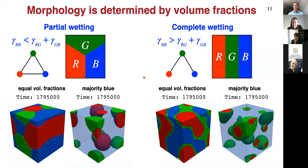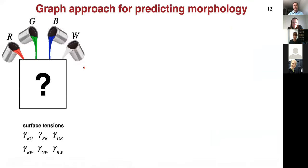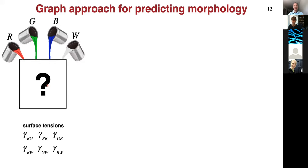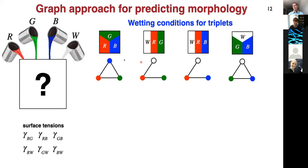Now how do we generalize these ideas to more than three phases? Let's say we have four coexisting phases with known surface tensions. We should be able to gain information by just knowing what the triplets of phases are doing. For example: red, blue, and green are in partial wetting, so they like stable triple junctions; but white, red, and green have complete wetting where red completely wets the white-green interface; and similarly for white and blue. If locally three phases come together, we know how they will arrange.